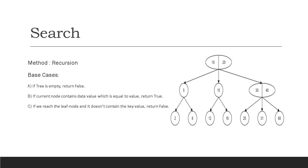Now let's discuss the common operations in a 2-3 tree. First, we'll begin with search. The method by which we will search is recursion. If we have to search a value, we compare the value with the values in the node. If it's less than the left value in the node, we move to the left subtree. If its value is between the values in the node, we move to the middle subtree. And if its value is greater than the rightmost value, the second value in the node, then we move to the right subtree.